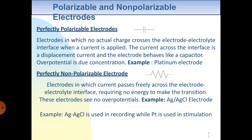In the case of perfectly polarizable electrodes, these are electrodes in which no actual charge crosses the electrode-electrolyte interface when a current is applied. The current across the interface is displacement current, and the electrode behaves like a capacitor. The overpotential is due to concentration. An example is the platinum electrode, which needs energy to make a transition.